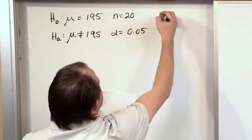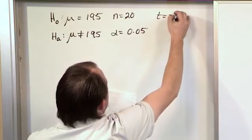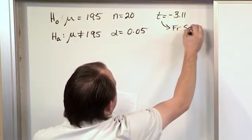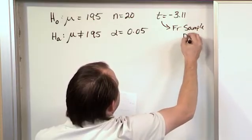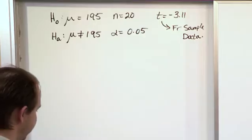So we have alpha 0.05. And from the data, from the 20 cars that we pull off the assembly line, we calculate a value of T, which is 3.11. This comes from the sample data. And I haven't showed you how to calculate that yet, but we will get there, I promise you, very soon.